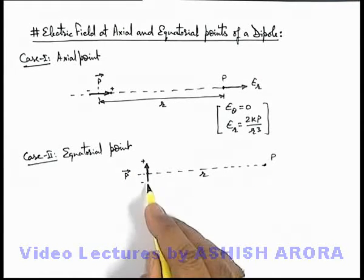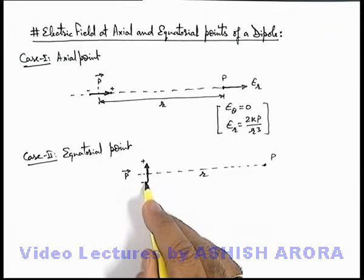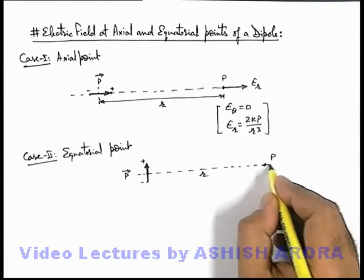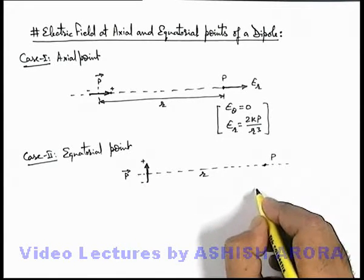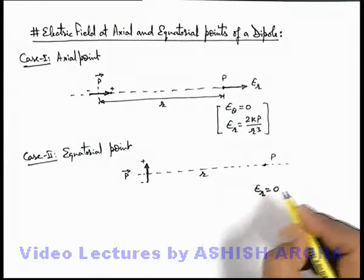So as these two charges are symmetrically located, in this situation no radial component exists, or we can say radial electric field is zero.